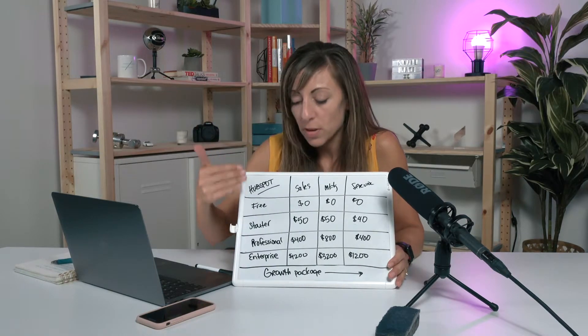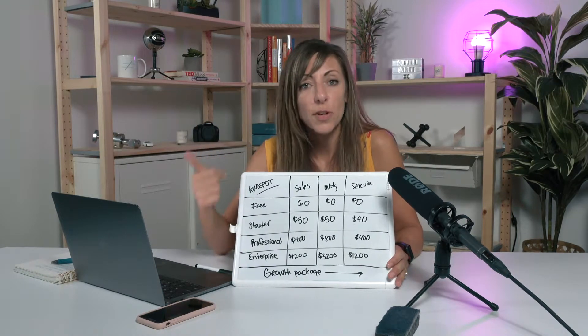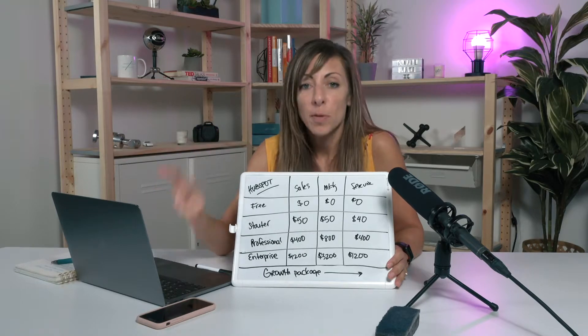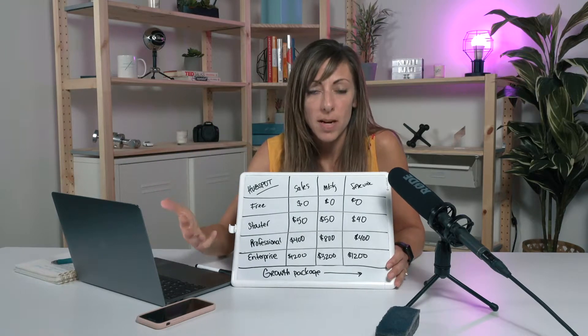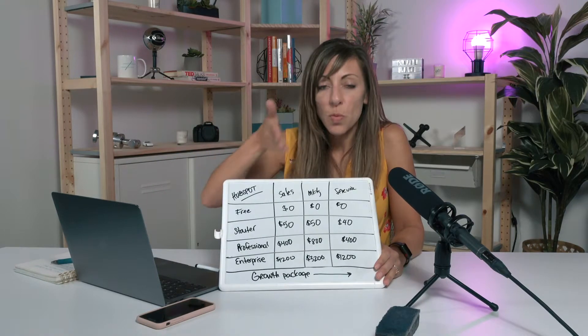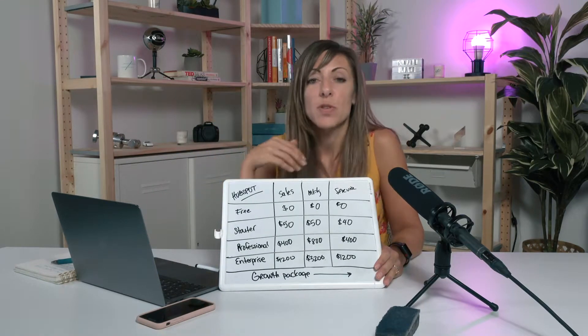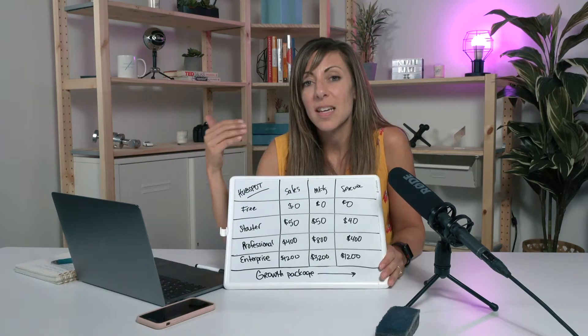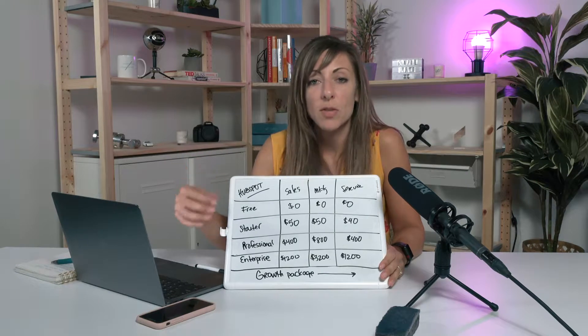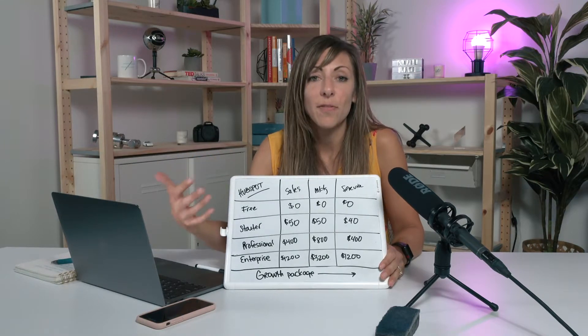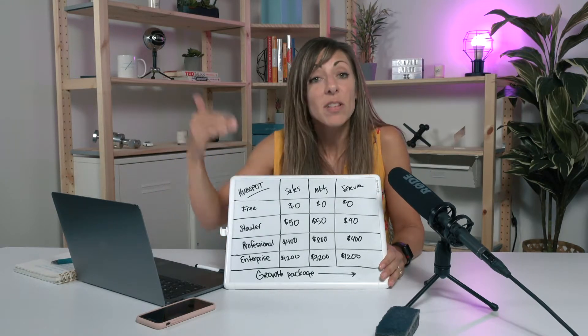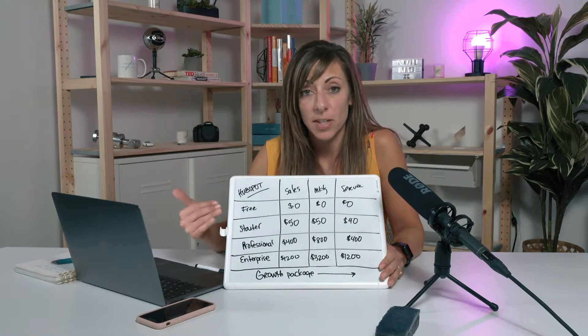From a structure standpoint, they've got four levels: free, starter, professional, and enterprise. Each one of these modules is priced individually so that if you need that functionality, you can add it in at the level that makes sense for your company.